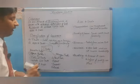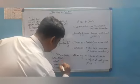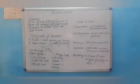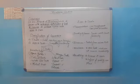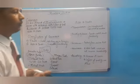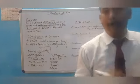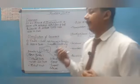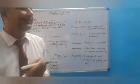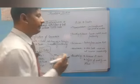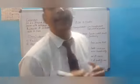External trade is further divided into three parts: export, import, and entrepot. Export refers to the sale of goods to foreign countries. If we are buying something from foreign countries, it is known as import.